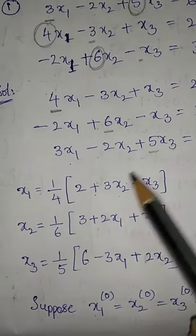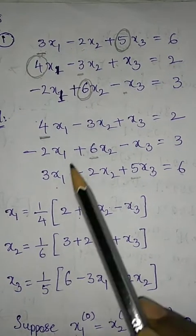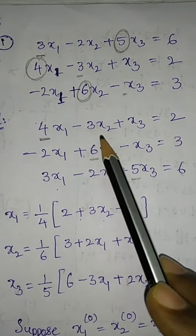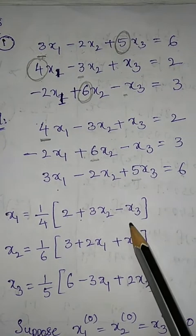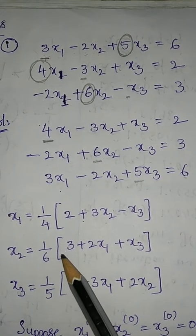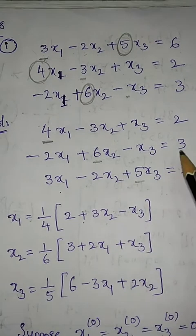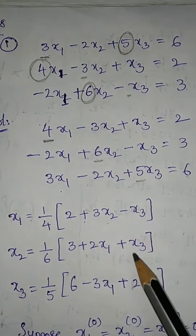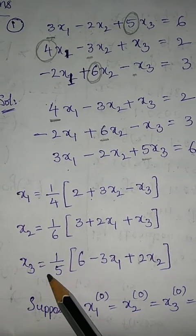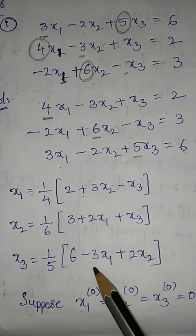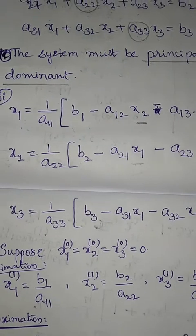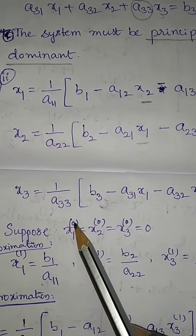In our example, from the first equation: x1 = (1/4)(2 + 3x2 − x3). Since in the second equation x2 coefficient is dominant: x2 = (1/6)(3 + 2x1 + x3). Since in the third equation x3 coefficient is dominant: x3 = (1/5)(6 − 3x1 + 2x2). Once these are set up, we initially assume the 0th approximations x1 = x2 = x3 = 0.